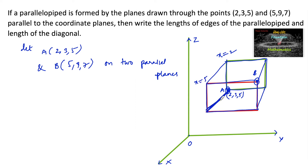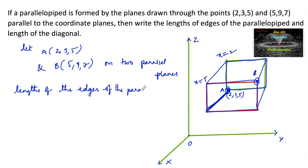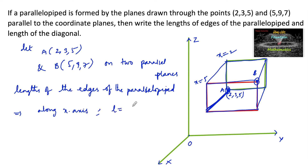The distance between these two planes is the difference between their coordinates. So the lengths of the edges of the parallelepiped along the x-axis: length = |5 − 2| = 3 units.